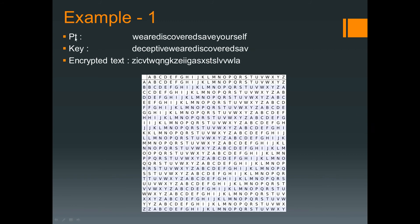In example one, we have a plain text and a key. The plain text is 'we are discovered, save yourself' — the same as the previous example — and the key is 'deceptive'. The remaining characters of the intermediate text are filled from the beginning of the plain text string up to the character that satisfies the condition where the intermediate text length equals the plain text length. As you can see, the length of the intermediate text is now equal to the length of the plain text.